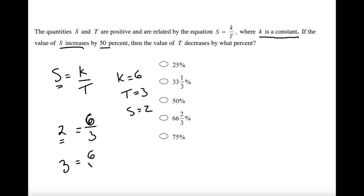So now we get 6 over t is equal to 3. But is this a true statement? Is 6 over 3 equal to 3? It's not. In order to make this true, t needs to decrease down to 2, because 6 over 2 makes 3.